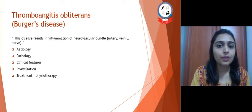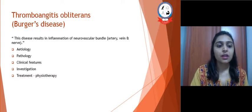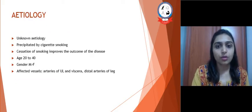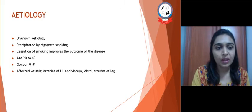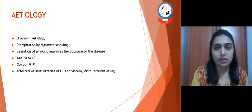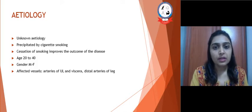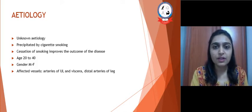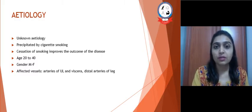Here are the points we are going to see in detail. The first is etiology. Usually the etiology is unknown for this disease, but it is precipitated by cigarette smoking. A heavy smoker may get TAO very easily.